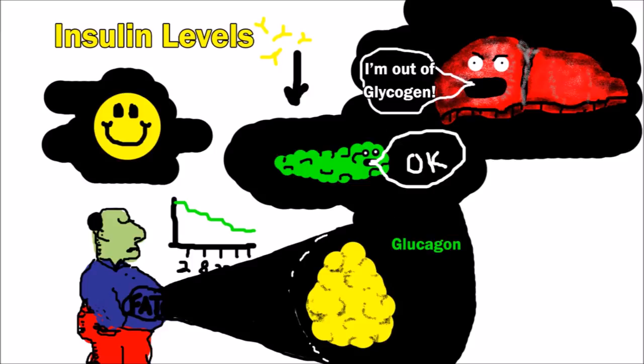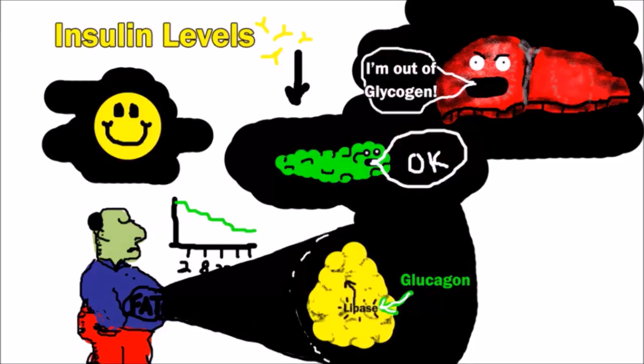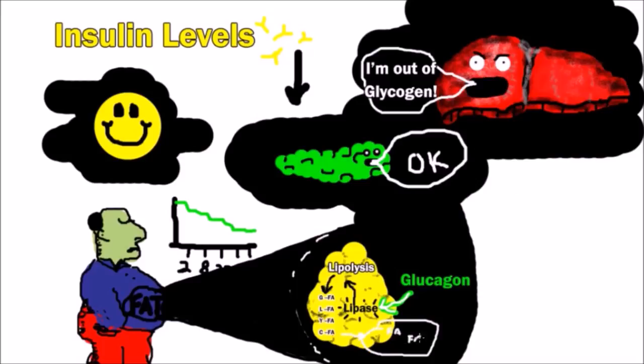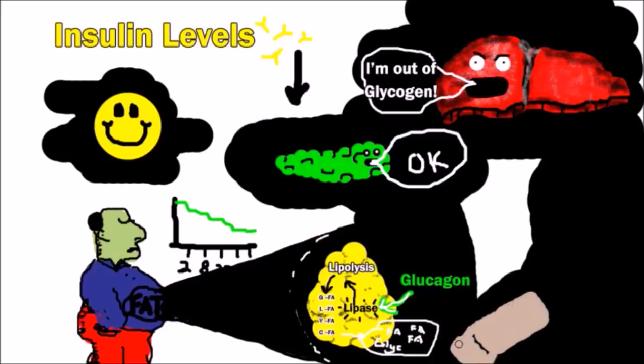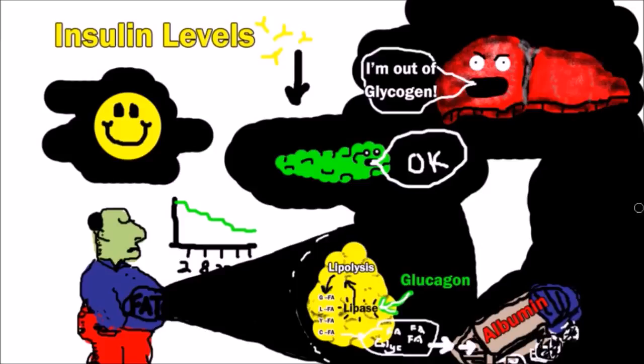Now, glucagon will activate the enzyme lipase in our fatty tissue, which causes lipolysis or splitting of fat, which breaks the backbone of triglycerides into fatty acids and glycerol.